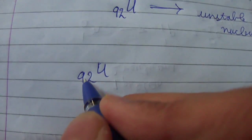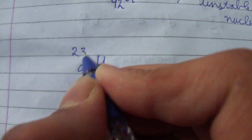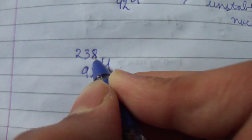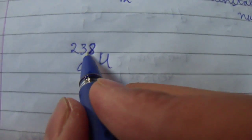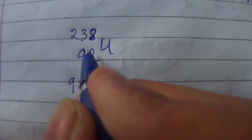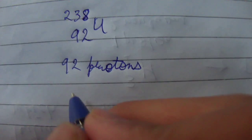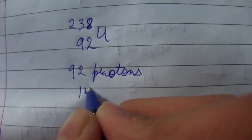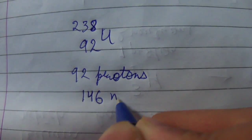The uranium nucleus has 92 protons, so its atomic number is 92, and its mass number is 238. That is 92 protons and 146 neutrons.